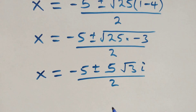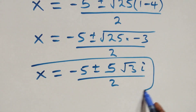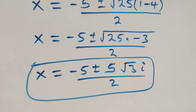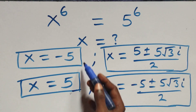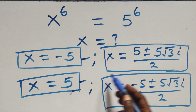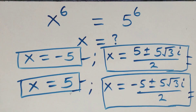Therefore, all together, we have six solutions to this given problem: two real solutions and two sets of two complex solutions.